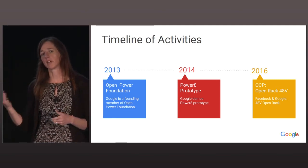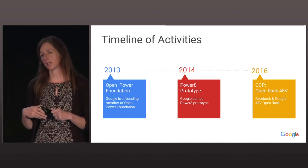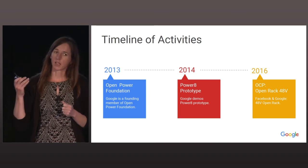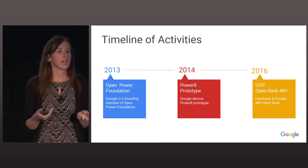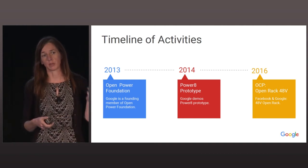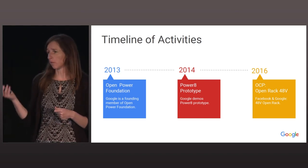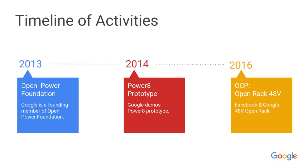Recently, continuing on the theme of open, our Senior Vice President Urs Hölzle announced at the OpenCompute Project Summit that Google has been building servers around the 48-volt to point-of-load architecture and has been deploying those servers for many years. The reason we build on 48 volts instead of the typical 12 volts is that we see a 30 percent improvement in power distribution losses. Google also announced at the OpenCompute Project Summit that, with Facebook, we're co-developing an open rack project built on that 48-volt architecture.